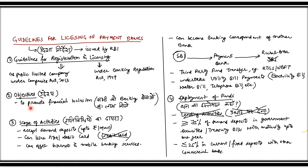दूसरी guideline है objectives के बारे में। RBI कहता है कि payment bank को अपने उद्देश्य बताने होंगे — payment bank क्यों open हो रहा है। Payment bank के open होने का objective यह है कि financial inclusion को ज़्यादा से ज़्यादा promote किया जा सके। जब सभी को banking सेवाओं का लाभ मिलता है तो उसे financial inclusion कहते हैं — और payment banks का उद्देश्य financial inclusion को promote करना होना चाहिए।